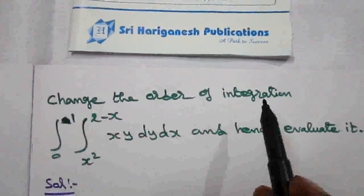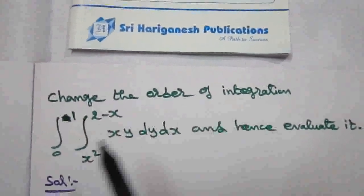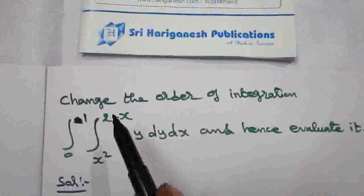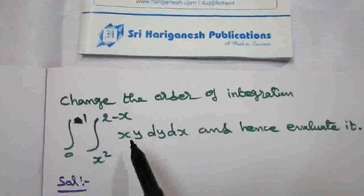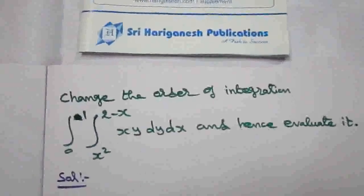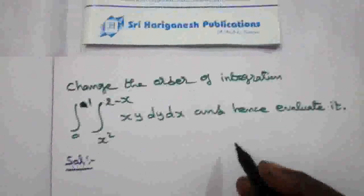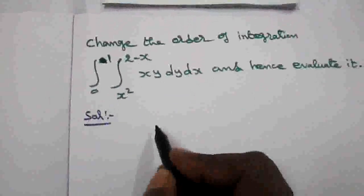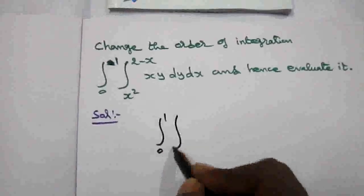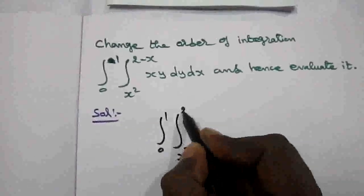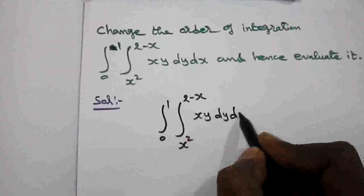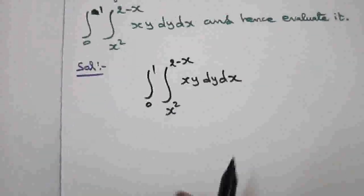Change the order of integration: integral 0 to 1, integral x squared to 2 minus x, xy dy dx, and hence evaluate it. So the given integral is integral 0 to 1, integral x squared to 2 minus x, xy dy dx.